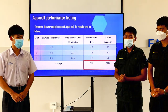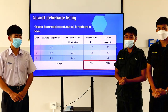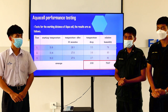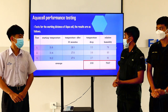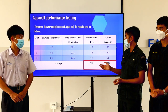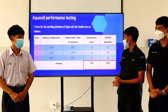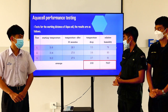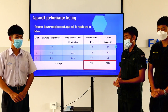Last, we test the working distance of the aqua cell. The average temperature drop is 3.5°C and the average humidity is 79.67%.